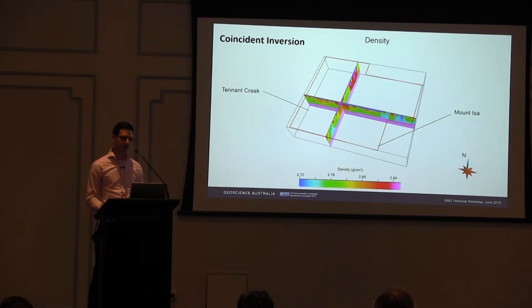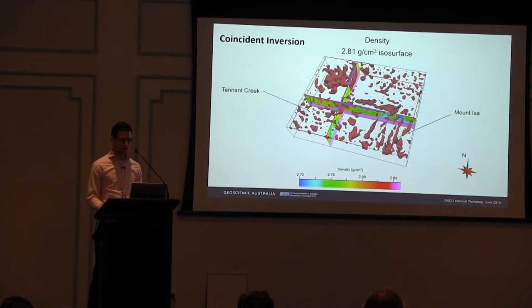We can do the same thing for our density model. Again, there's that hard near-surface constraint and a hard constraint for where we've put in a MOHO layer, and the properties in between are varying smoothly. We can interrogate these models in various different ways.